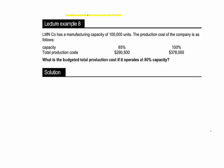In example eight we're asked to work out the budgeted total production cost if the factory operates at 80% capacity. We've been given costs for 100% and 65% capacity. So we need to use the high-low method to work out the equation y = a + bx. 100% capacity equals 100,000 units, and 65% capacity equals 65,000 units.